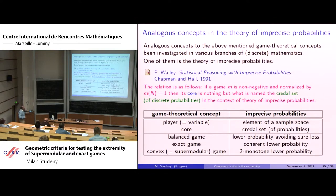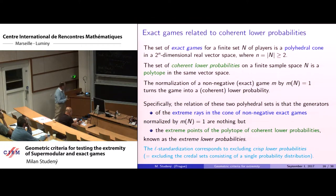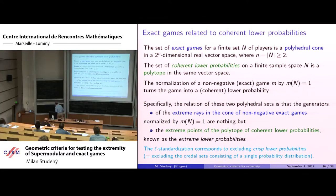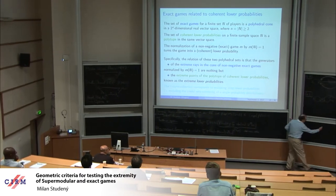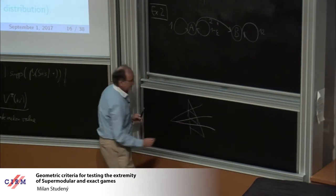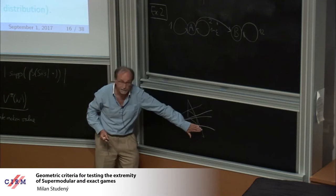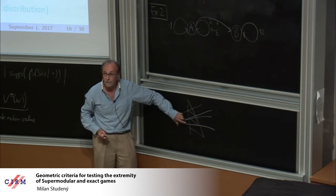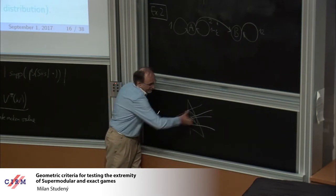The mathematical relation between game theory and imprecise probabilities is this: you have a cone, cut it, and get the polytope. In imprecise probability, they are interested in the polytope — the credal set — while in game theory the focus is on the cone. Elements of the credal set are additive probability distributions; the lower probability is a non-additive set function that provides lower bounds on those probabilities.